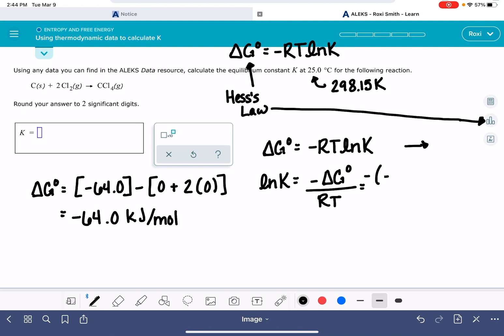We have negative, negative 64 kilojoules per mole. That's the delta G value that was calculated using Hess's law. Divide that by the gas constant, R, 8.3145 joules per mole Kelvin, and also the temperature, 298 Kelvin. I'm going to leave off the 0.15 because I'm running out of room.